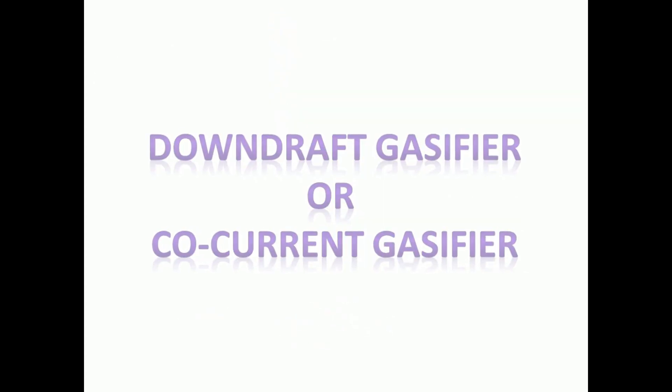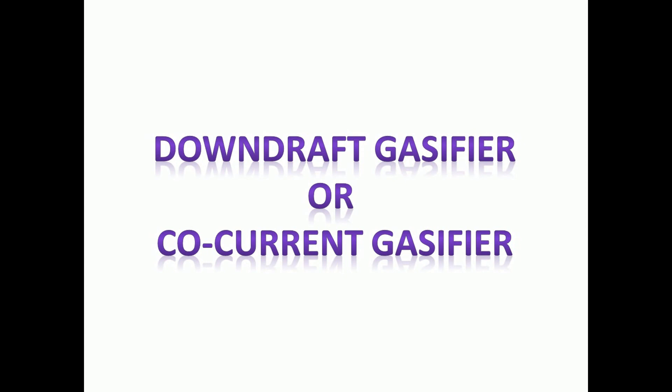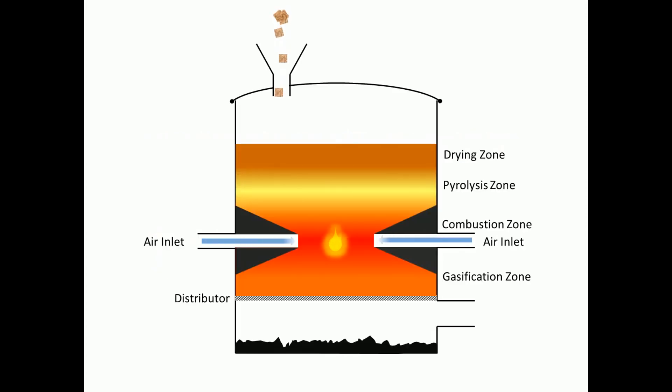The second type is downdraft gasifier or co-current gasifier. In this gasifier, air is introduced at the combustion zone, and produced gas is removed in the same direction. On the way down to the bottom, biomass must pass through a red-hot charcoal bed and are converted into hydrogen, carbon dioxide, carbon monoxide, and methane.